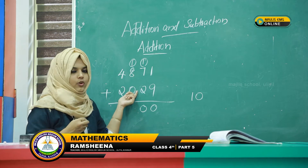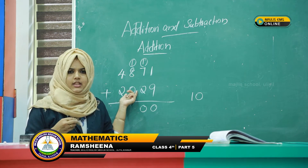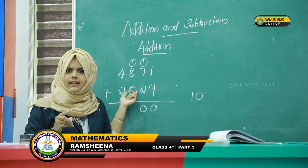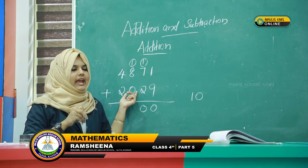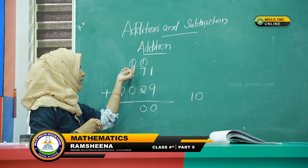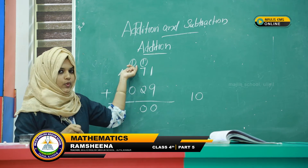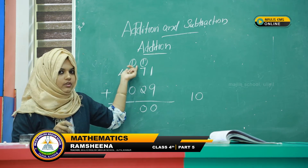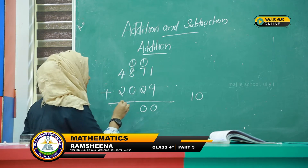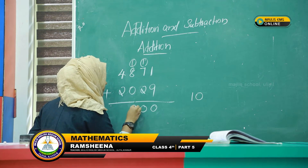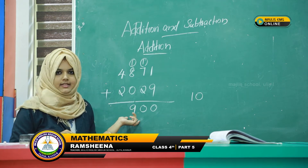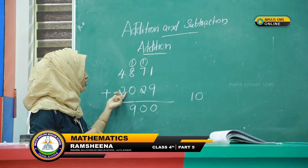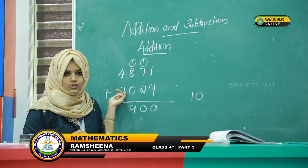Then 8 plus 0 is equal to 8. Then 8 plus 1 is equal to 9. Then next number: 4 plus 2.